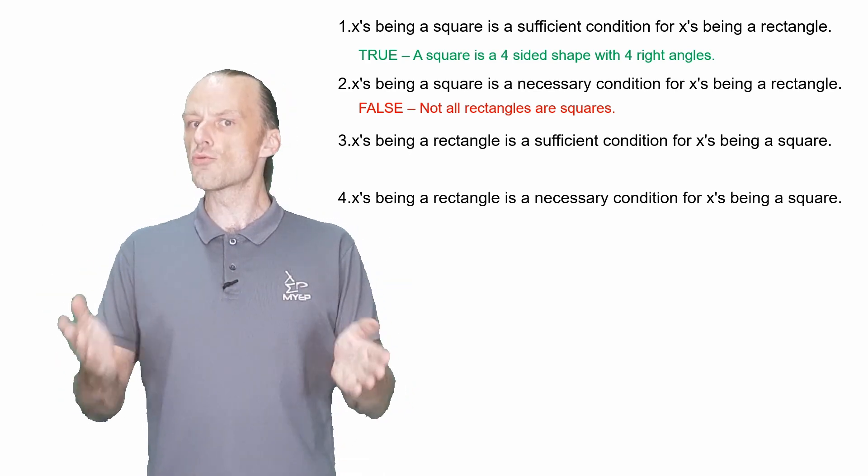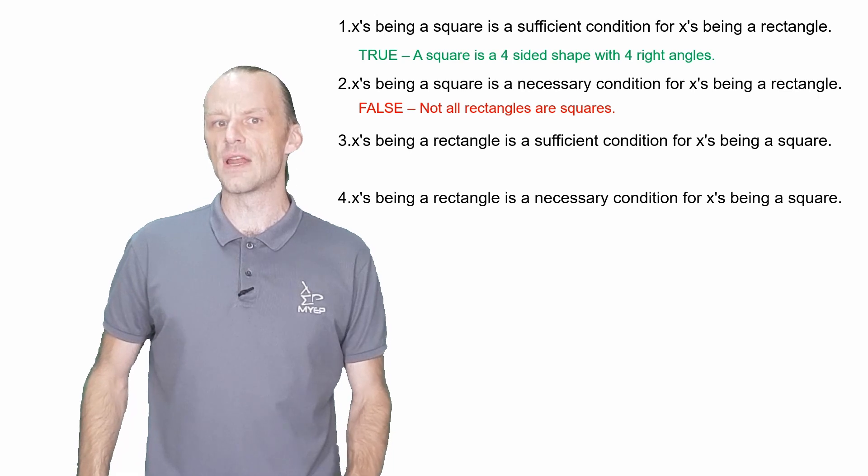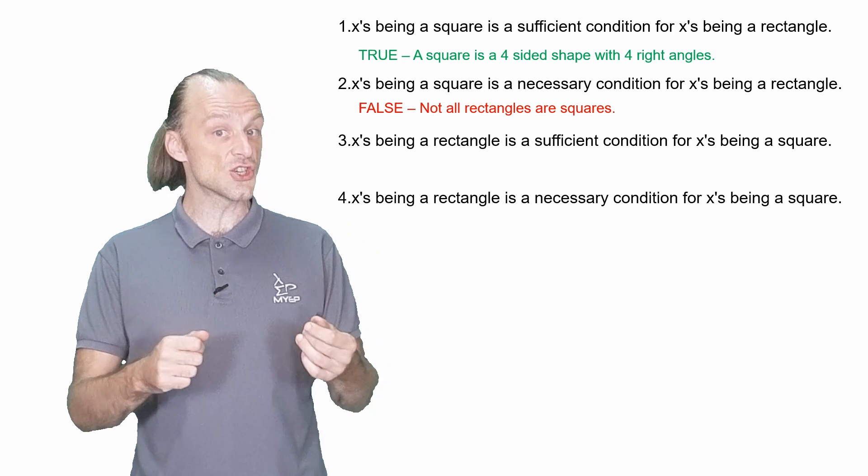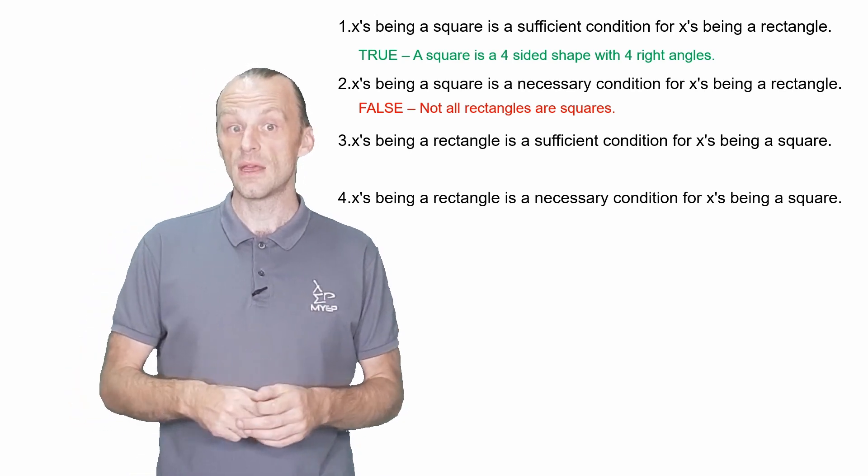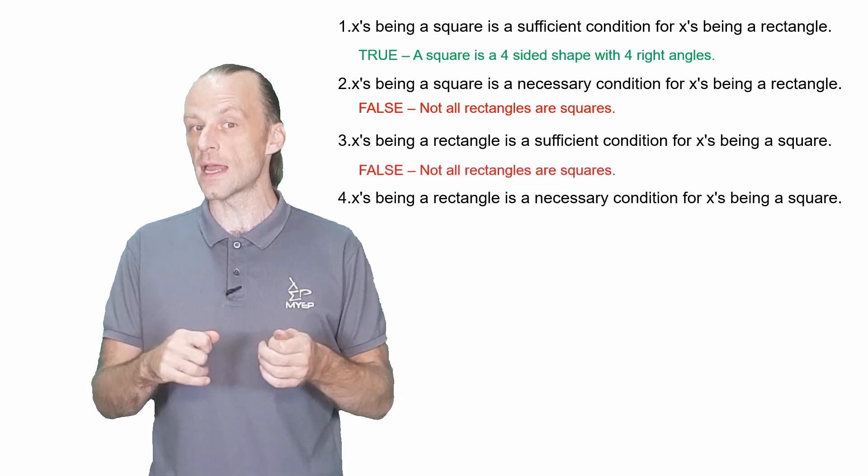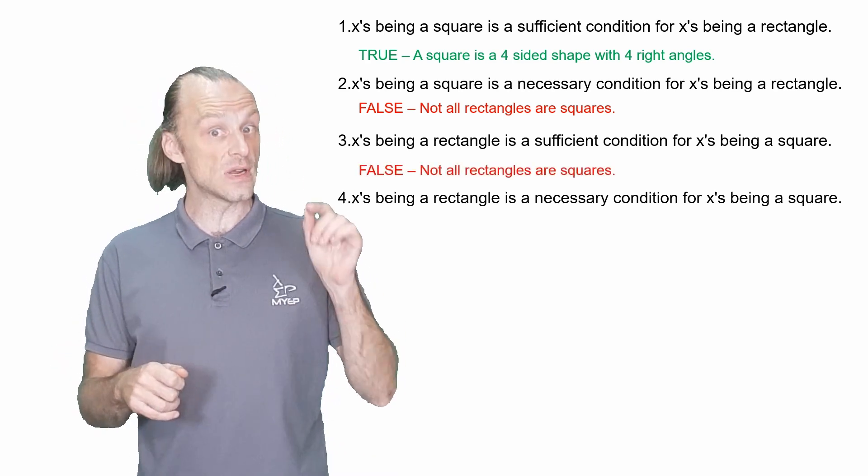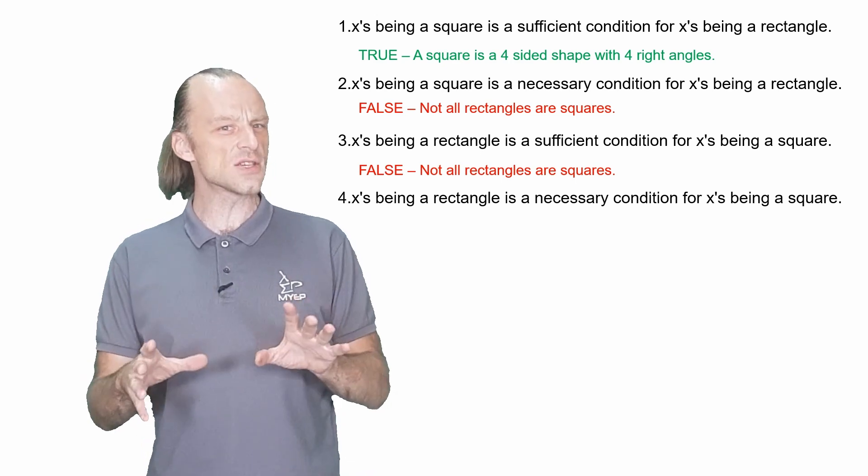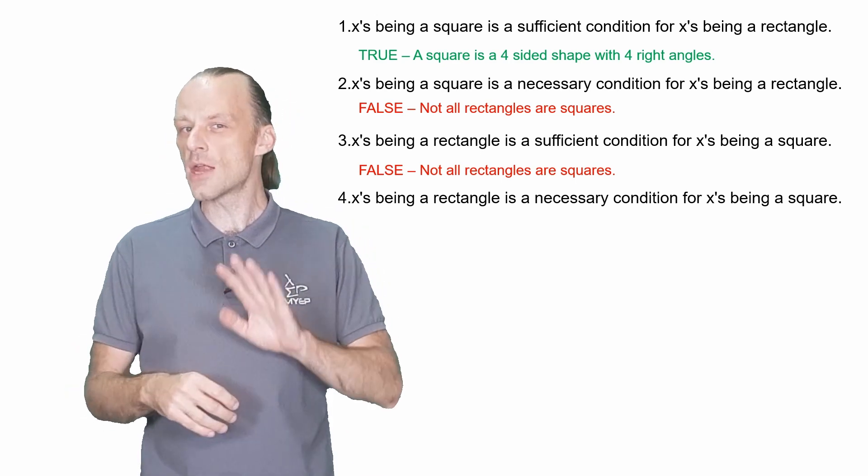Three and four reverse A and B in our relationship. For three, is X being a rectangle a sufficient condition for X being a square? This is also false because it claims that if X is a rectangle is true, that guarantees that X is a square is also true. And we already saw there are many rectangles that are not squares.